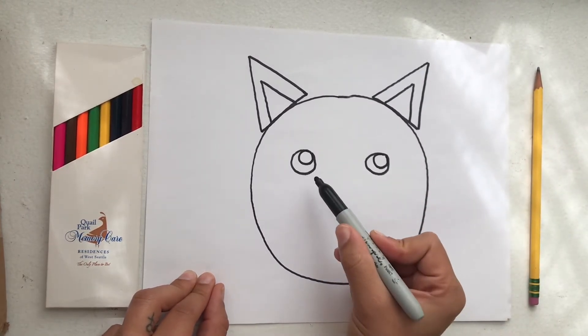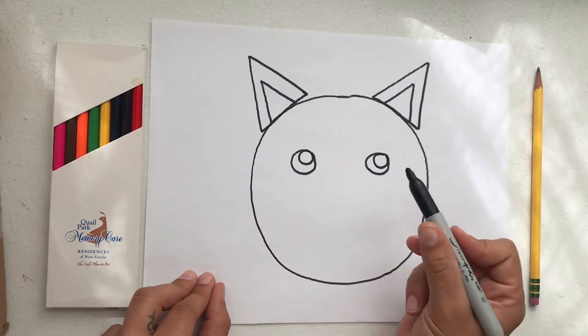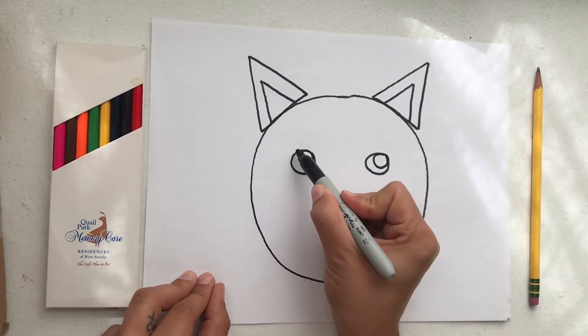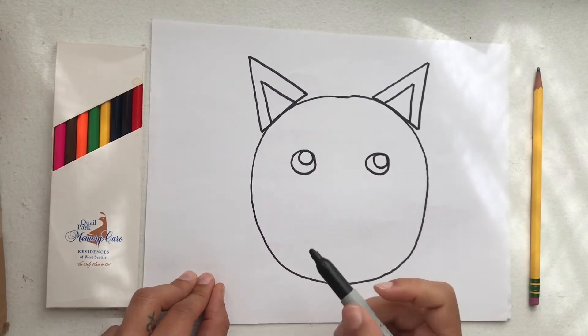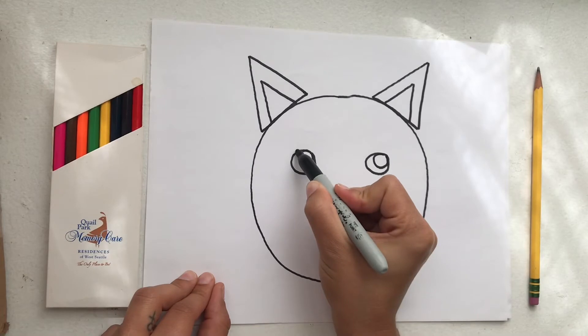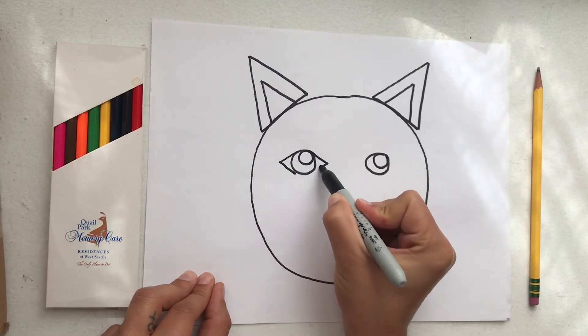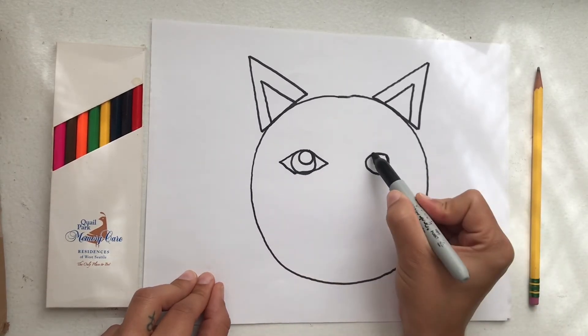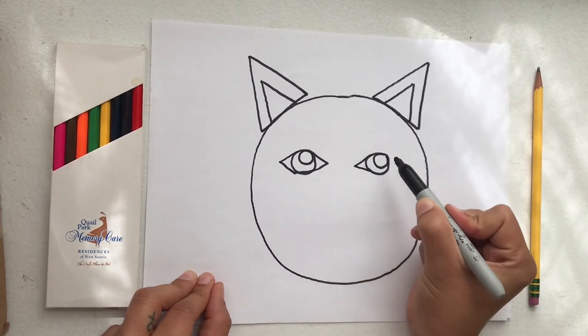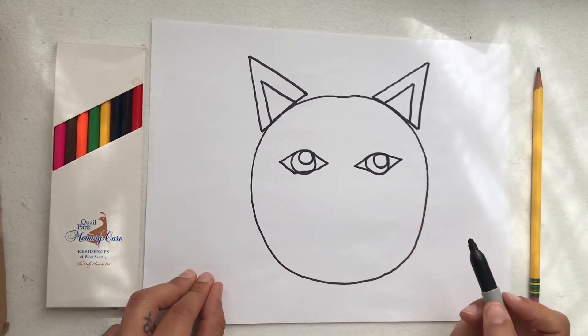You don't need to do this next part if you would like to keep your circle eyes just as they are, but on mine I am going to draw two sideways triangles on the side of my kitty eyes just like this. This gives my kitty a nice cat shaped eye. But once again if you want to keep your kitty eye just a circle that is totally fine.